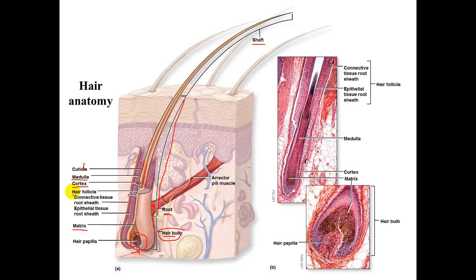Finally, let's look at the hair follicle and the erector pili muscle. The hair follicle is comprised of a connective tissue root sheath and an epithelial tissue root sheath. The erector pili muscle is a smooth muscle that extends from a dermal papilla to the hair follicle itself. It elevates the hair upon contraction — the muscle pulls in one direction, the hair becomes elevated — and that is what produces goosebumps on human skin.